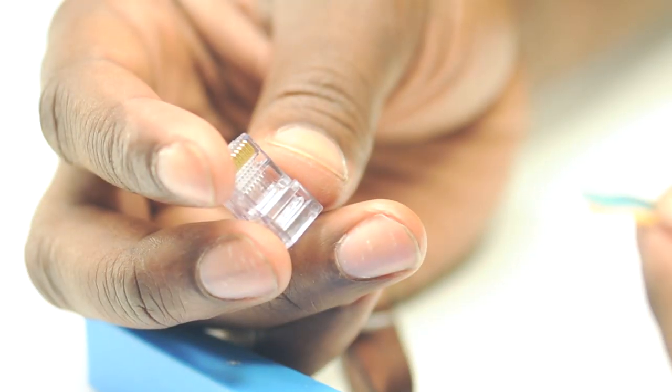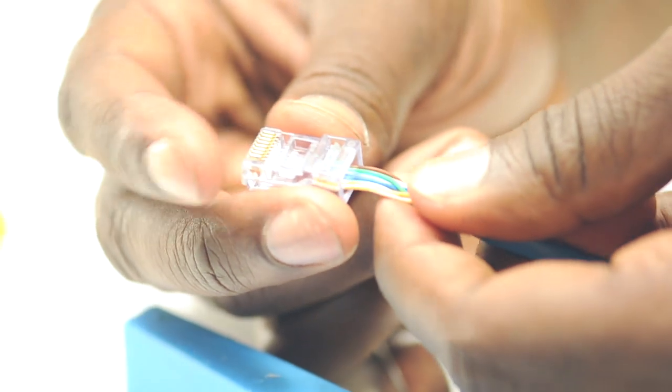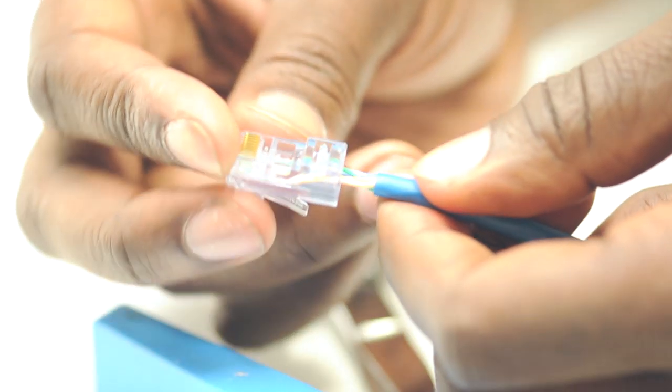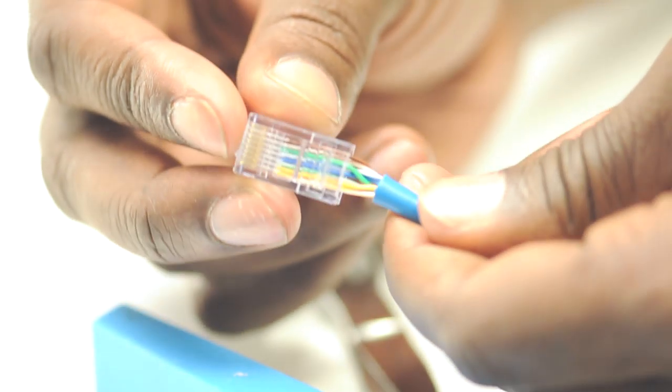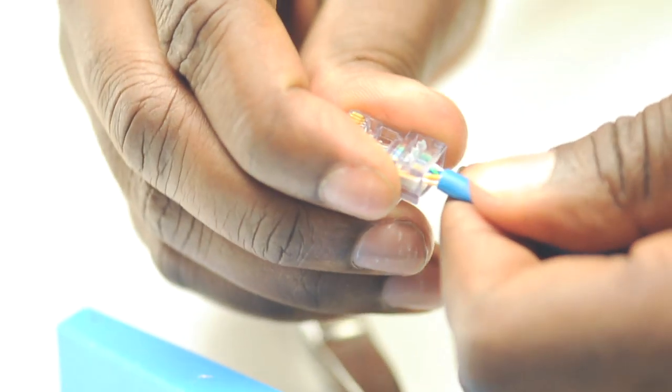Unlike most RJ45 connectors, the EZRJ45 connectors have holes in the front. This allows extra wire to go through the connector. For this connector, we recommend leaving over an inch of exposed cable.